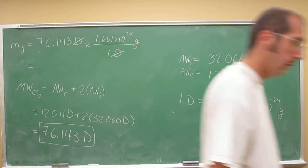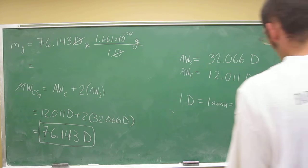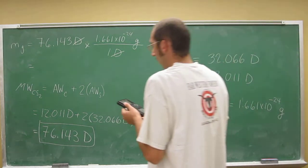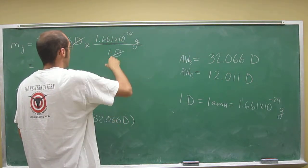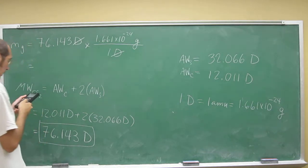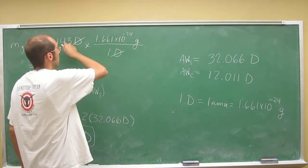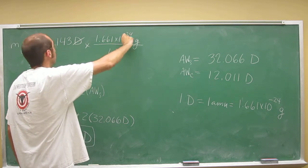And then take your calculator and multiply your last answer by 1.661 E to the negative 24th. And remember, on a lot of calculators, E is this times 10. So just push E. And then you should get a very small number. As you can imagine, this number times this number is going to be a very small number. It should be somewhere around 10 to the negative 22.